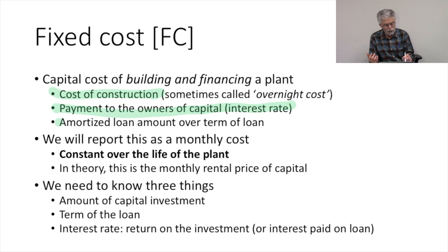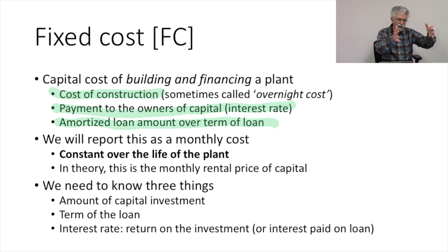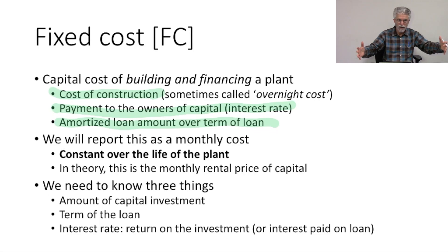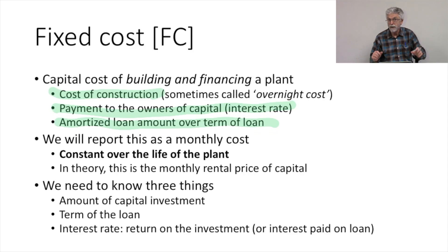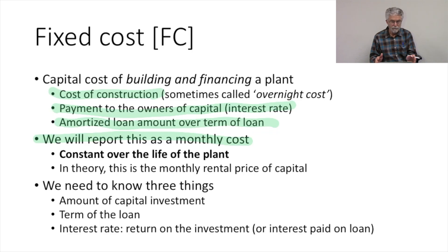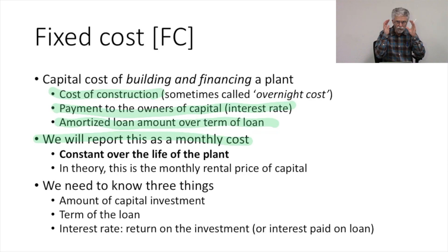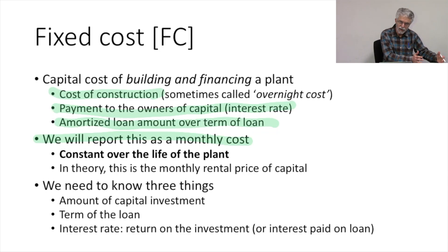We want to think about capital costs in terms of the amortized loan — the amortized amount over the term of the loan. In order to pay back the loan, we're going to pay back both the initial capital borrowed and the interest payment, all put together in one payment: the amortized loan amount. The key idea is that our fixed costs are constant over the life of the plant. We'll be paying back this loan over a long period — say 30 years — and every month we'll have the same payment to make.